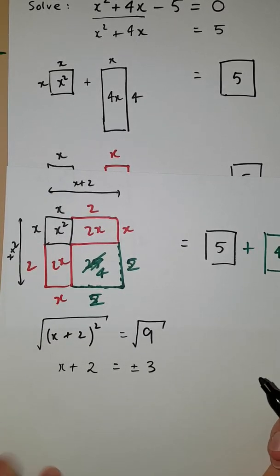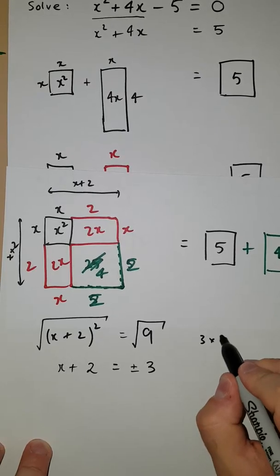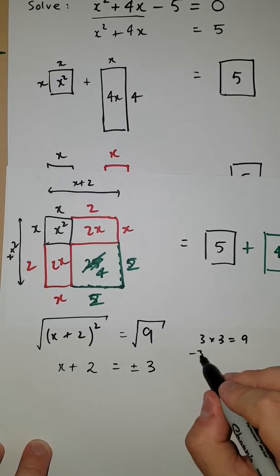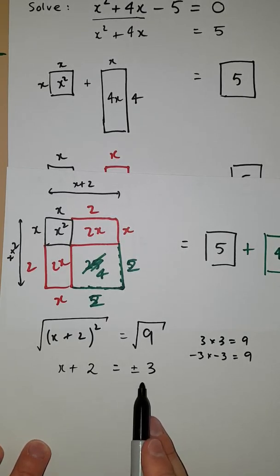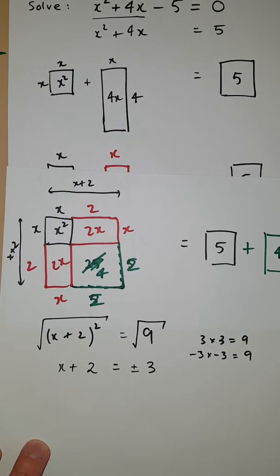Remembering, of course, that 3 × 3 = 9, but also -3 × -3 is also equal to positive 9. So we'll always get this plus or minus case when we're taking square roots.